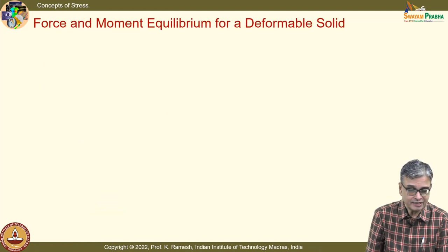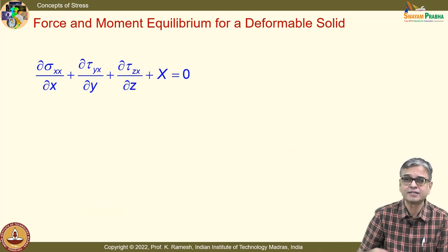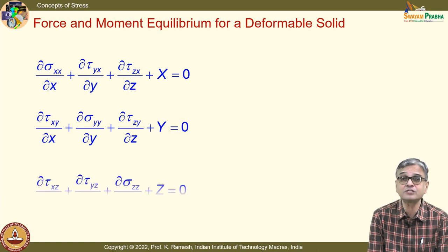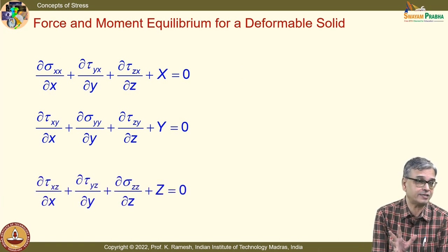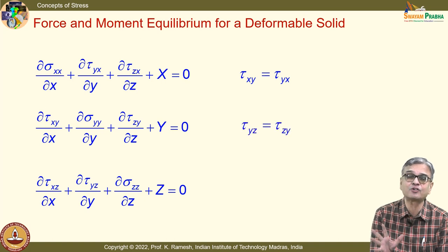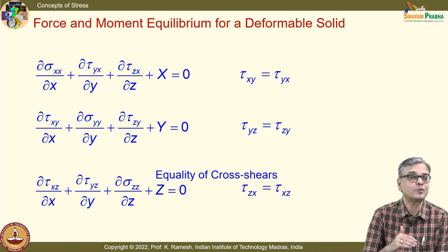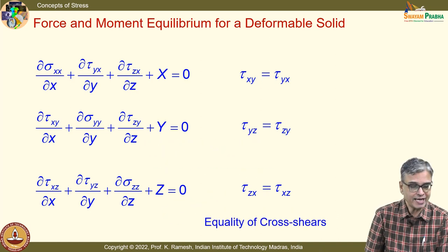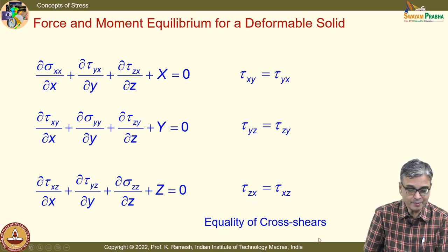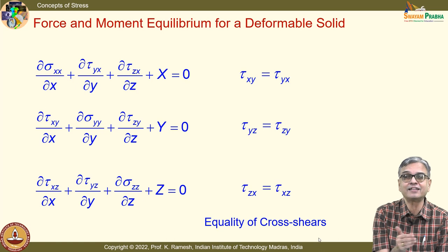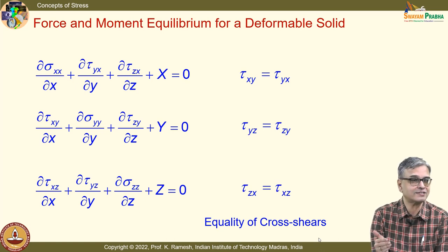I can have infinite possibilities of subsystems, and if I solve the differential equation, the equilibrium condition is completely satisfied. The force equilibrium condition and moment equilibrium condition together establish the equality of cross-shears, which we already used when writing Cauchy's formula for finding the stress vector.